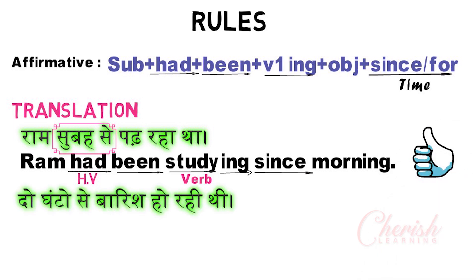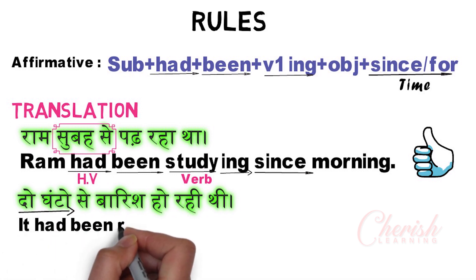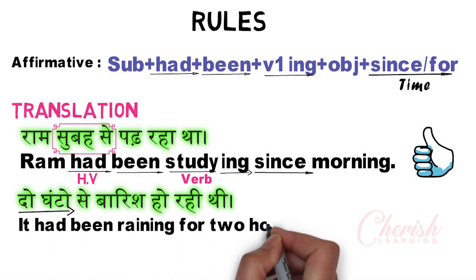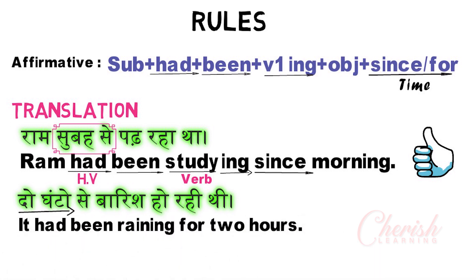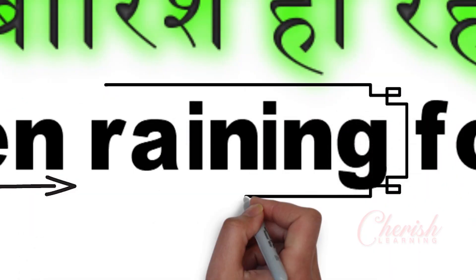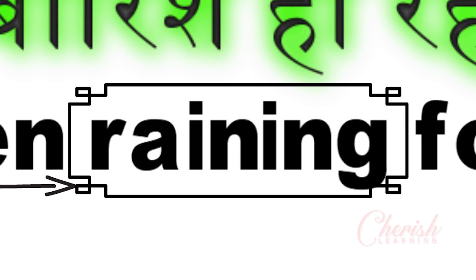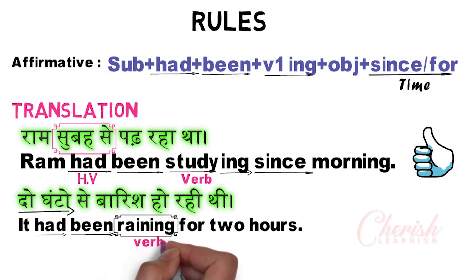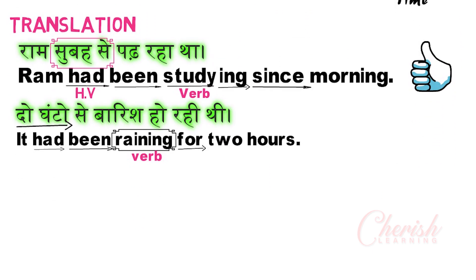Next example: 'It had been raining for 2 hours.' How many hours was it raining? 2 hours. So this is a past perfect continuous tense example. Let's translate this: 'It had been raining for 2 hours.' Very simple — 'had been,' then rain+ing = 'raining.' This is the verb. Then 'for' is used because the duration is 2 hours — so 'for 2 hours.'